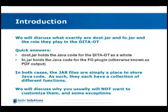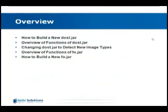We'll discuss why you usually don't want to customize them and some exceptions where you might want to. The first thing we'll go through is how to build a new copy of dost.jar, then what's in dost.jar. We'll give a specific example of changing dost.jar to detect new image types — for instance, BMP images weren't supported for one client. Then we'll give an overview of functions in fo.jar. Building fo.jar is done the exact same way as dost.jar.